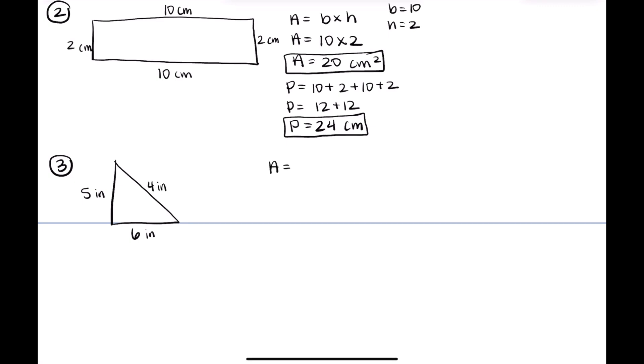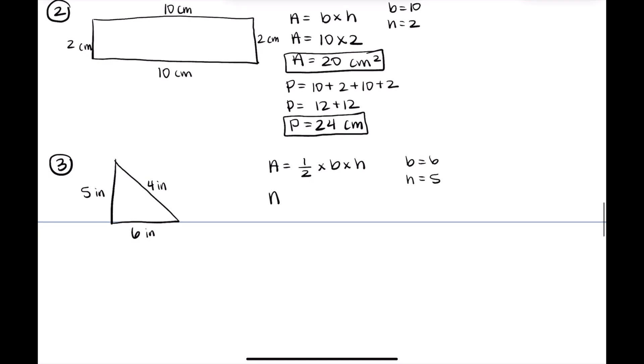So for area of a triangle, we remember that the equation is one half base times height. Our base is six and our height is five. So we'll go through here and fill everything in. It will be one half times six times five. We know that six times five is 30. So it's basically one half times 30.